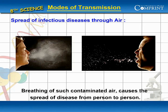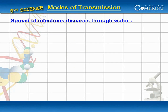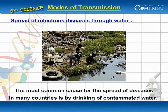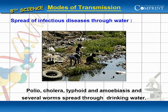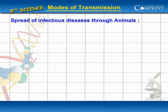Spread of infectious diseases through water: the most common cause for the spread of diseases in many countries is drinking contaminated water. Polio, cholera, typhoid, amoebiasis, and several worm infections spread through contaminated drinking water.